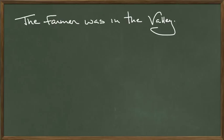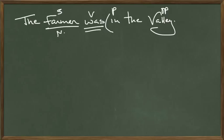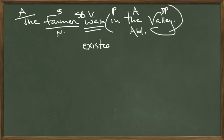The farmer was in the valley. Subject of the sentence: farmer, nominative case. He was — verb — he was where? He was in. 'In' is a preposition. In what? Valley — object of the preposition. 'In the valley' is a prepositional phrase, ablative case. 'The' is an article adjective. By the way, 'was' here is a state-of-being verb. You can tell it's a state-of-being verb if you can replace it with 'exists' or 'existed.' The farmer existed in the valley — yes, that works.